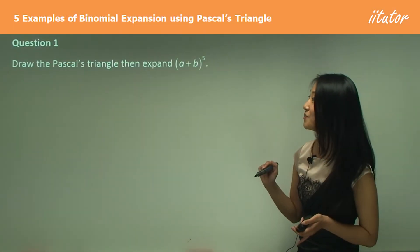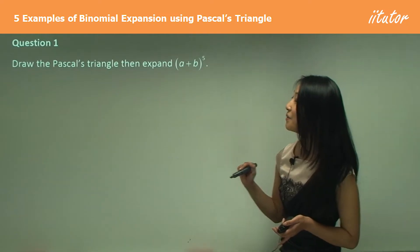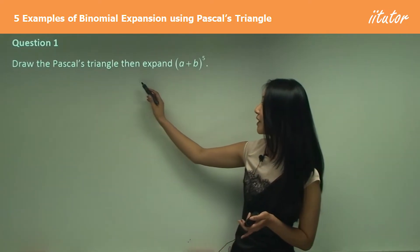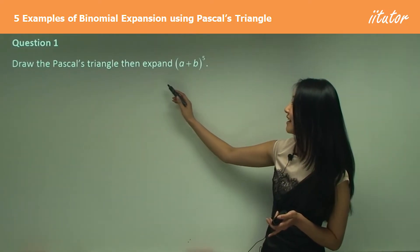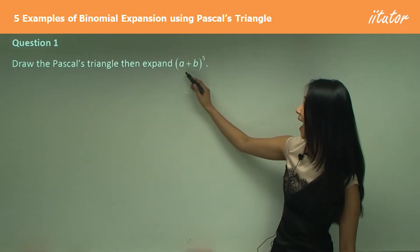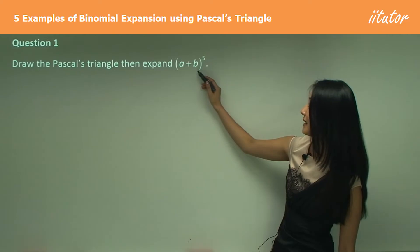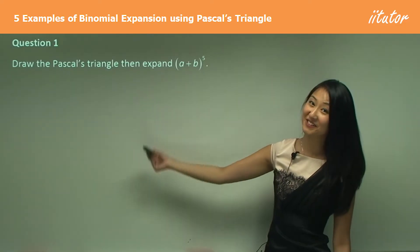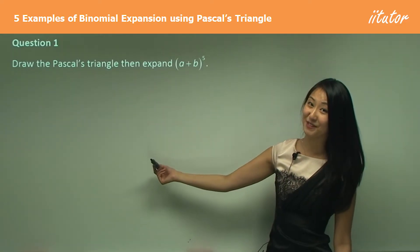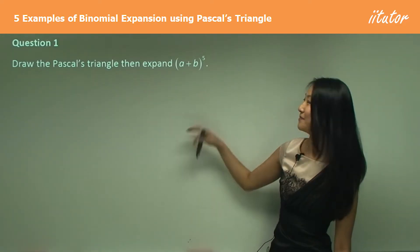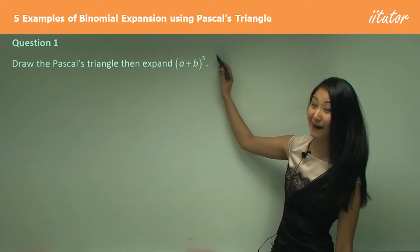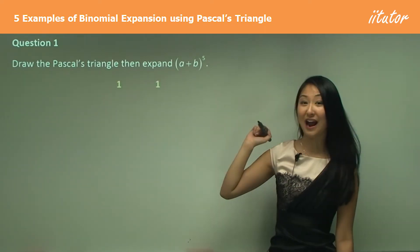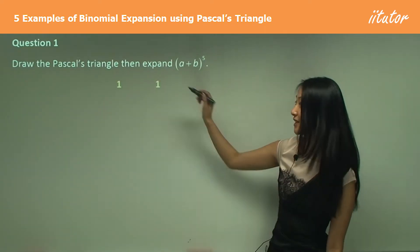In question one, we want to draw Pascal's triangle and then expand (a + b) to the power of five. We didn't do that in the example — we kind of stopped at (a + b) to the power of four. Let's first draw our triangle.